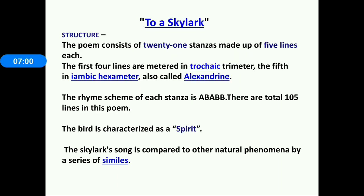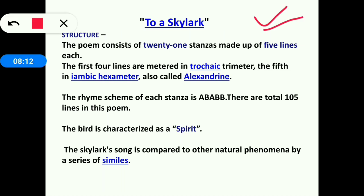The poem To a Skylark consists of 21 stanzas made up of five lines each. The first four lines are metered in trochaic trimeter and the fifth is iambic hexameter, called Alexandrine — this was asked in KVS and PGT examinations. The rhyme scheme of each stanza is ABABB and there are a total of 105 lines in the poem.